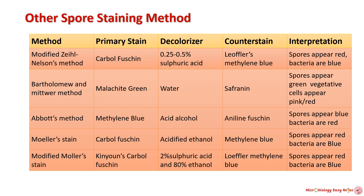In the Spore-Abode method, the primary stain is methylene blue, decolorizer is acid alcohol, and counterstain is aniline fuchsin; spores appear blue and bacteria appear red. In the Moeller stain, the primary stain is carbolfuchsin, decolorizer is acidified ethanol, and counterstain is methylene blue; spores appear red and bacteria appear blue. In the modified Moeller stain, the primary stain is Kinyoun's carbolfuchsin, decolorizer is 2% sulfuric acid and 80% ethanol, and counterstain is Löffler's methylene blue; spores appear red and bacteria appear blue.